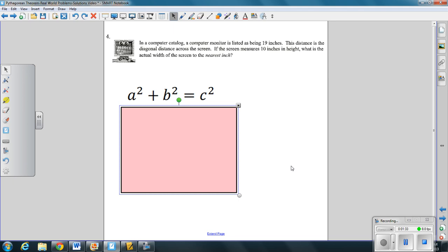Number four, in a computer catalog, a computer monitor is listed as 19 inches. This distance of 19 inches is the diagonal of the computer screen. So the diagonal represents what in a triangle. I hope you're all saying hypotenuse. So this 19 inches represents our C. If the screen measures 10 inches in height, so if I have a 10 here and 19 represents the hypotenuse, we are looking for what is the actual width to the nearest inch of the screen. So we're looking for this part of the screen here. So we're looking for a leg.